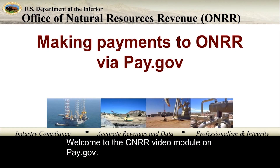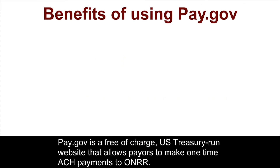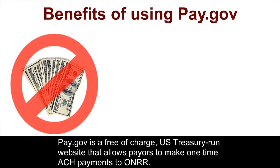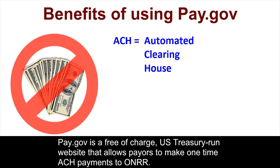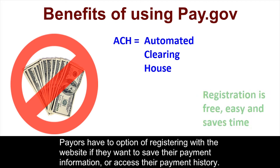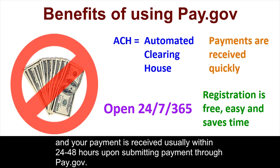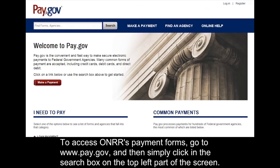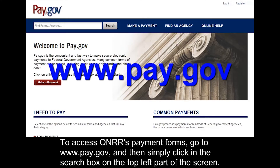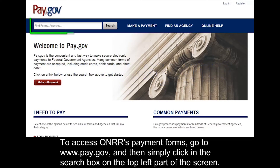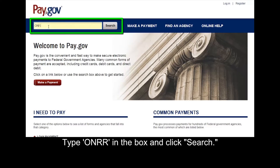Welcome to the ONRR video module on Pay.gov. Pay.gov is a free of charge U.S. Treasury run website that allows payers to make one-time ACH payments to ONRR. Payers have the option of registering with the website if they want to save their payment information or access their payment history. Pay.gov is open 24 hours a day, seven days a week including holidays, and your payment is received usually within 24 to 48 hours. To access ONRR's payment forms, go to www.pay.gov, click in the search box on the top left part of the screen, type ONRR in the box, and click search.